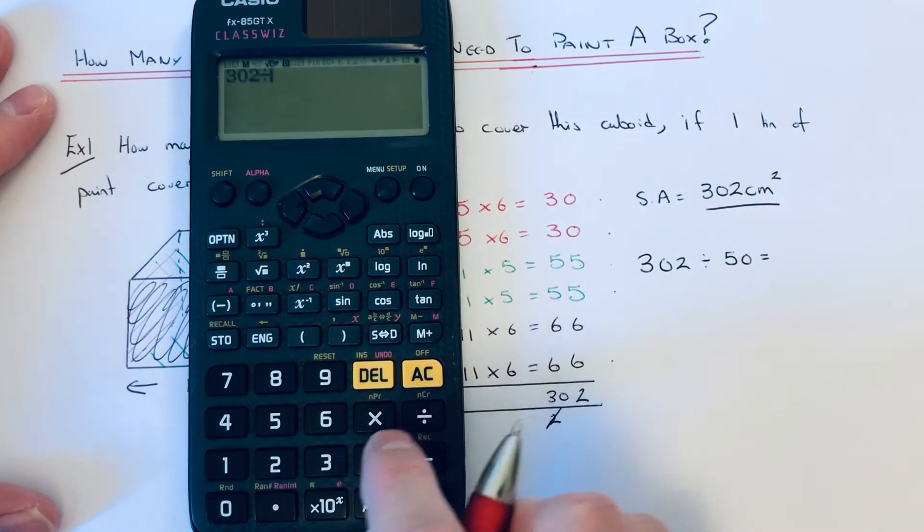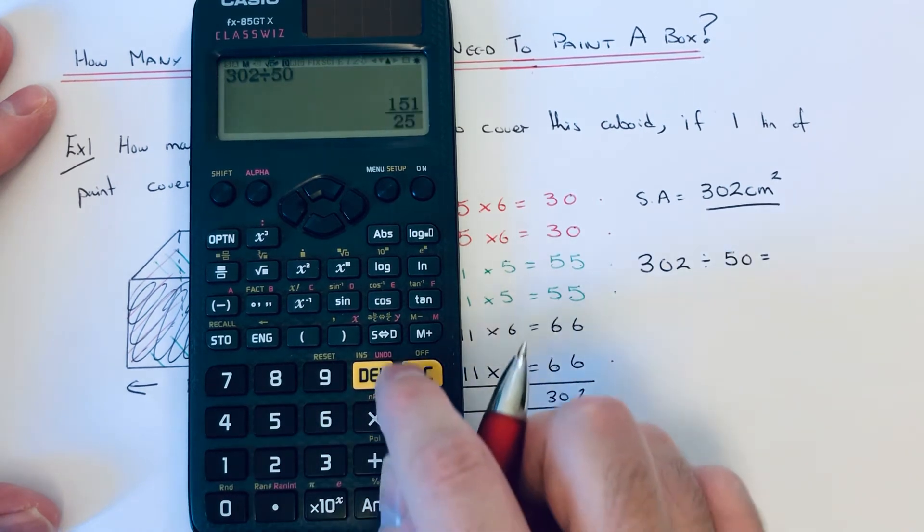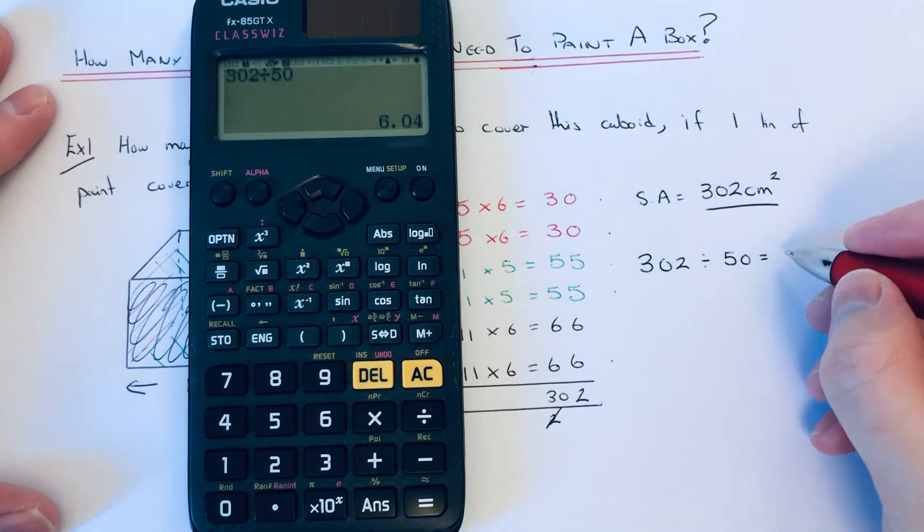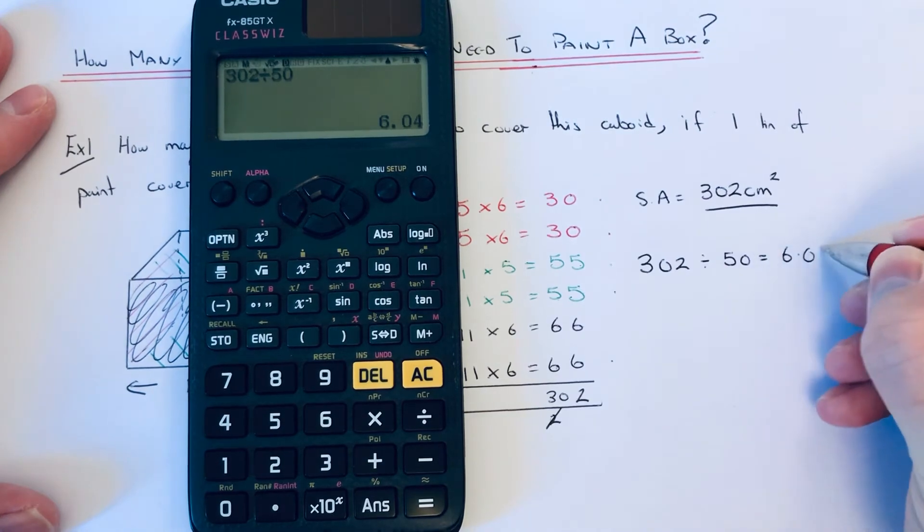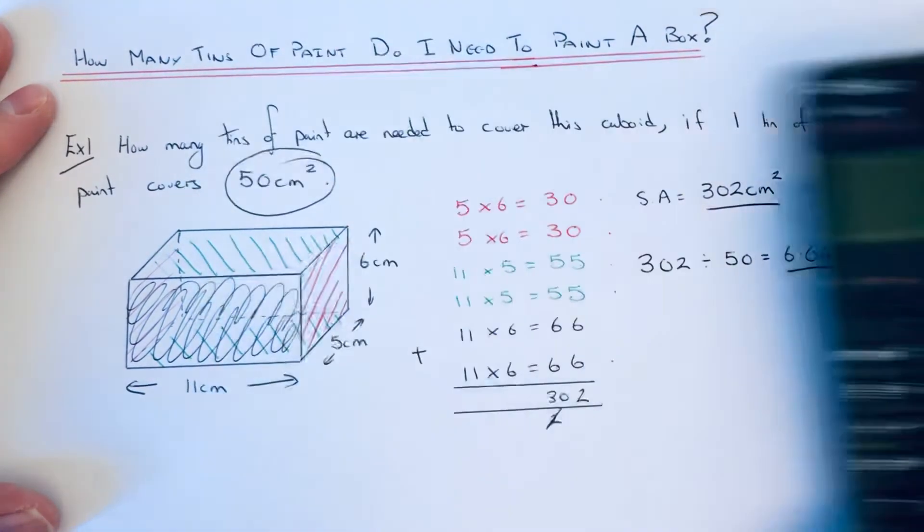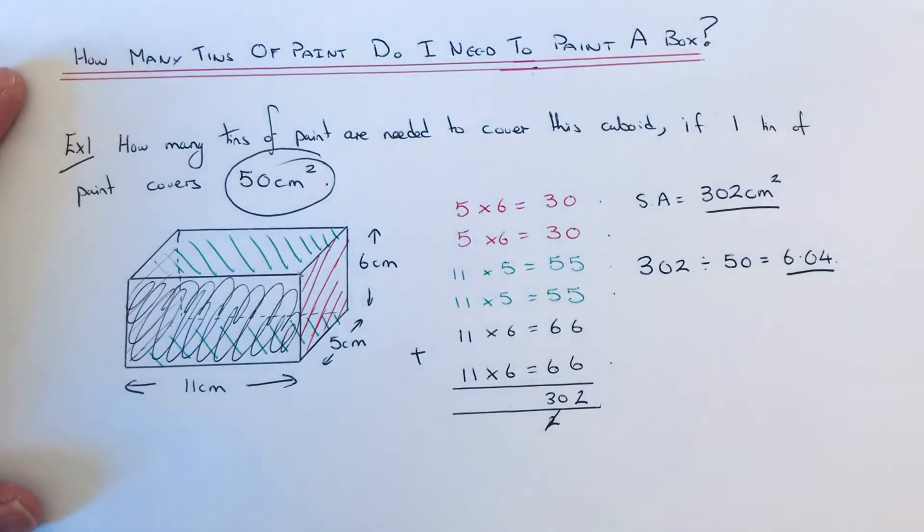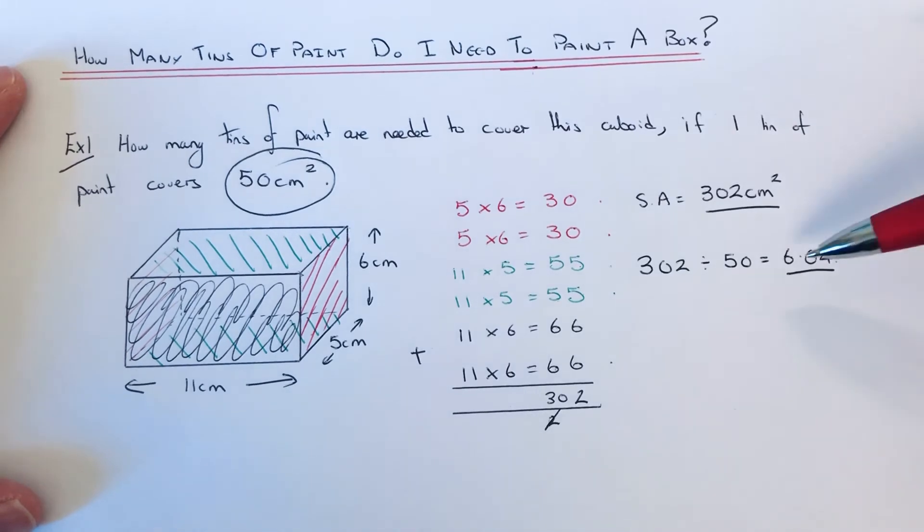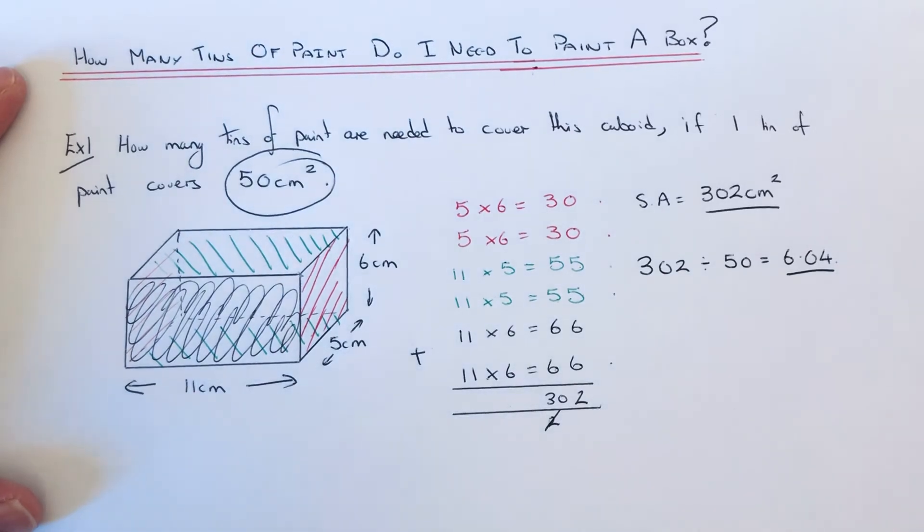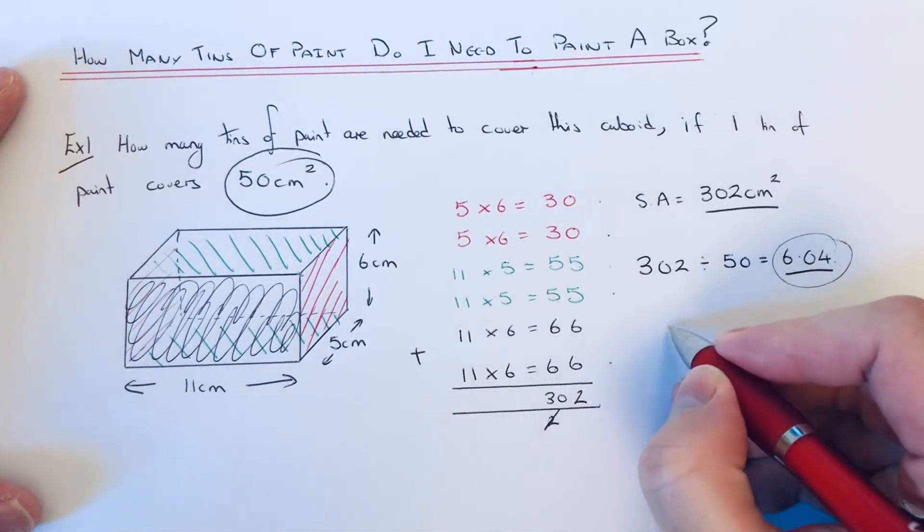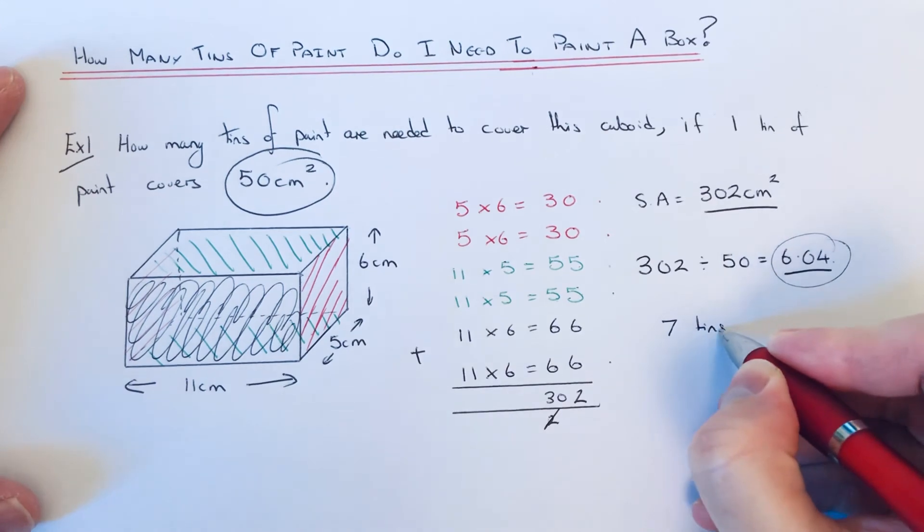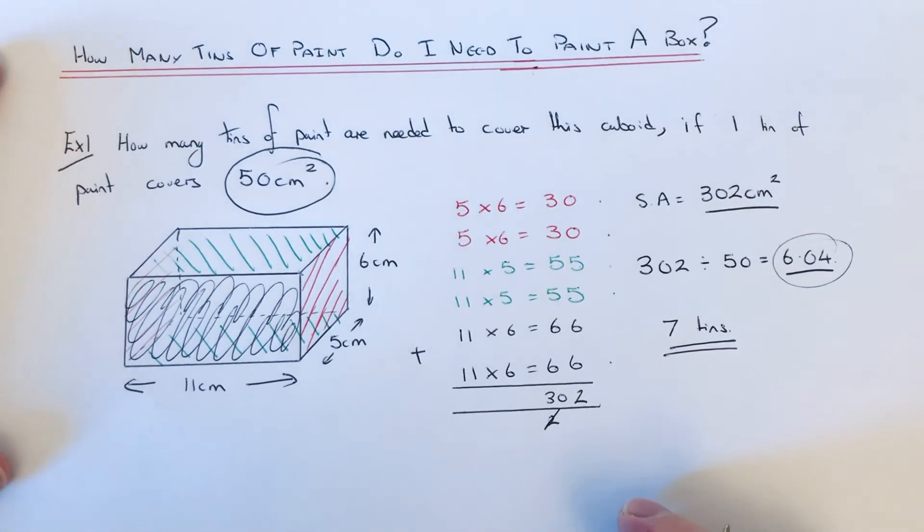So we get the answer 6.04. Now I've got to think about how many tins of paint we need to buy, because you can't buy 6.04 tins. There's two possibilities for an answer: we either buy six or we buy seven. If you buy six, it won't be enough because we've got to paint 6.04, so we need to round that answer up to seven. So it'd be seven tins of paint, and that is the final answer.